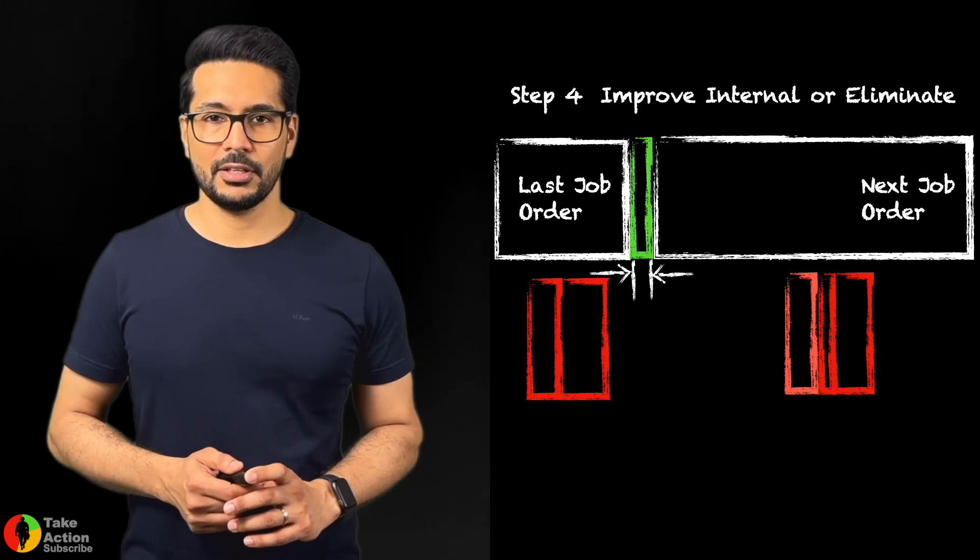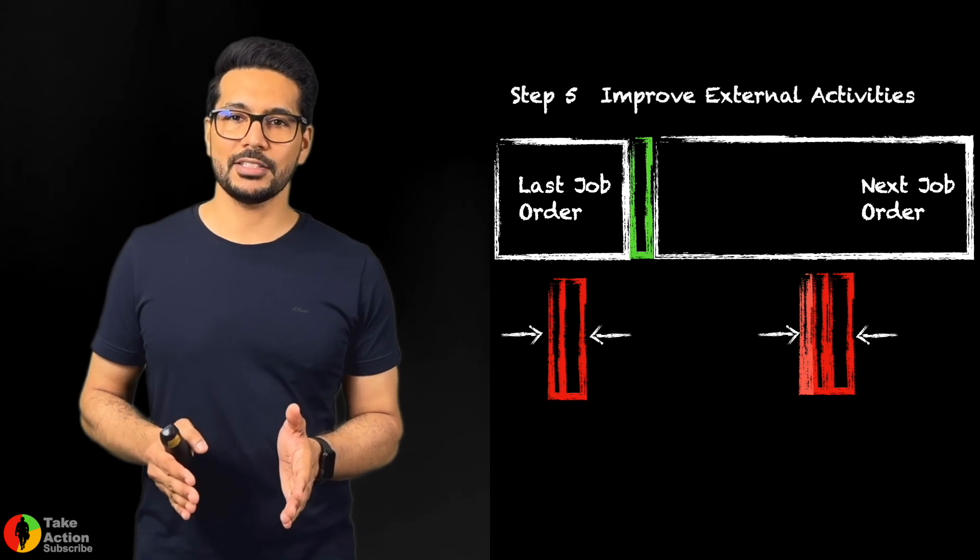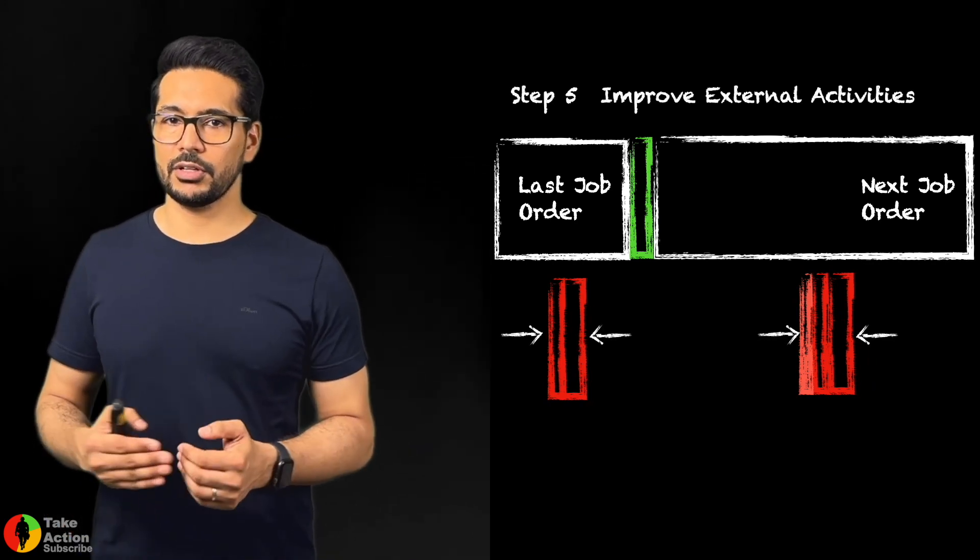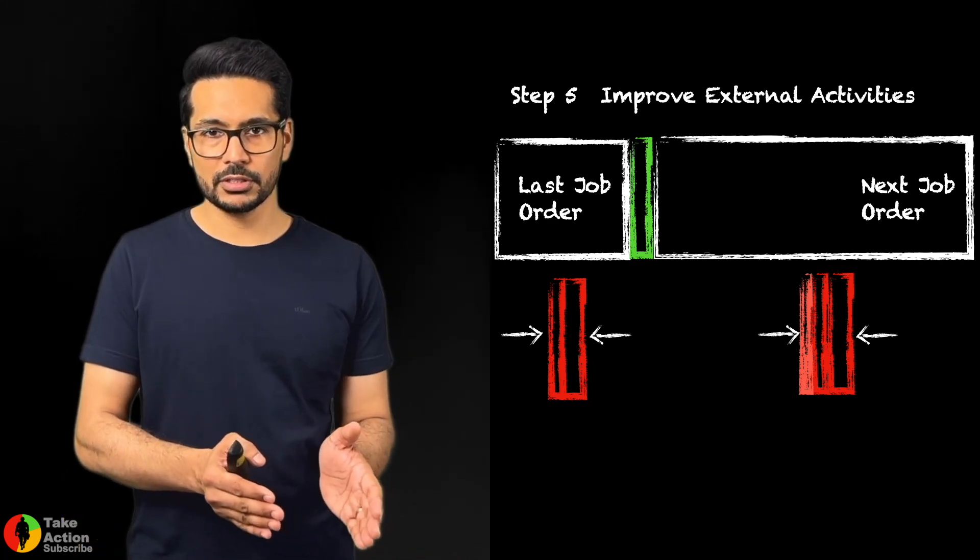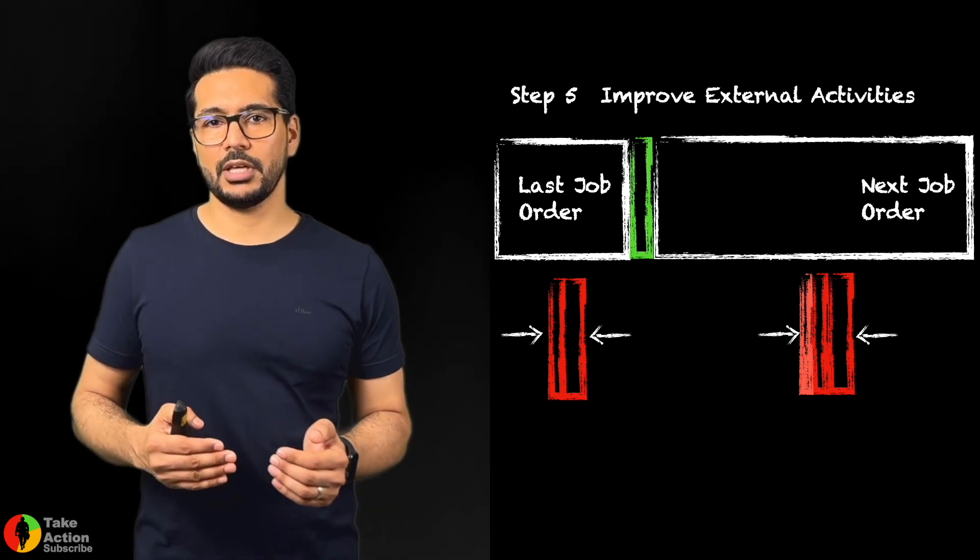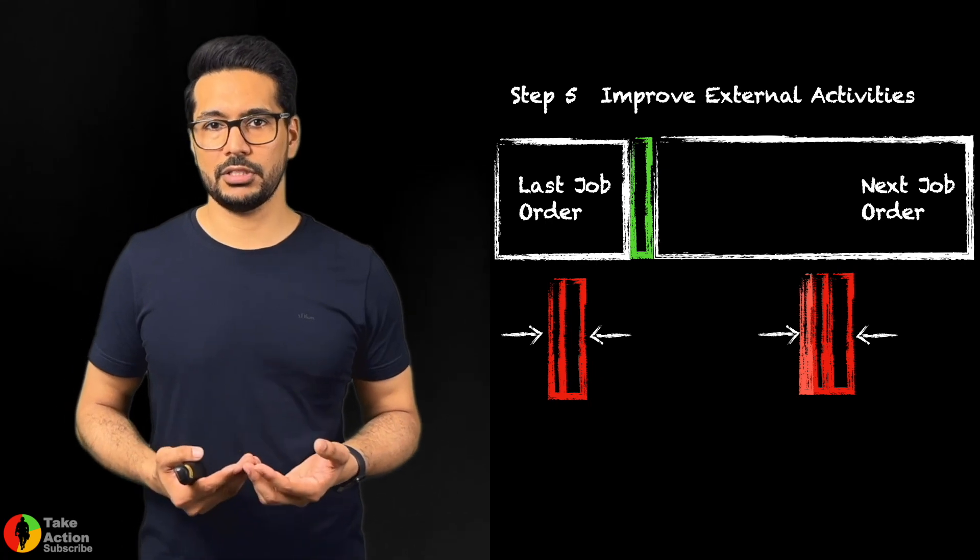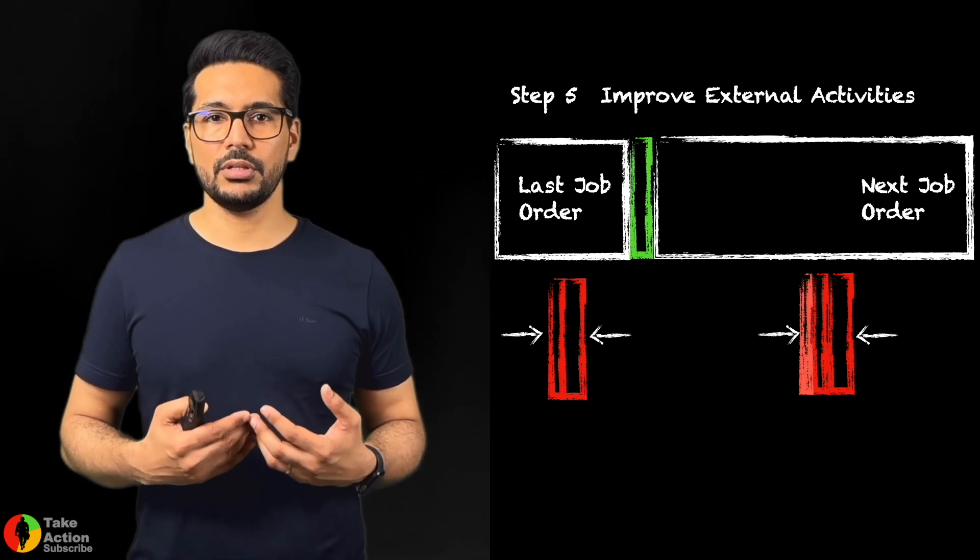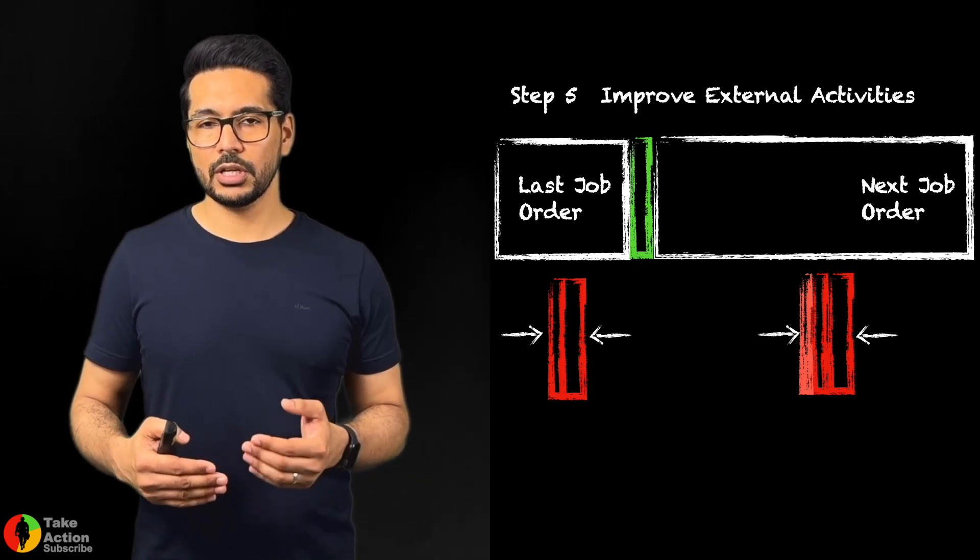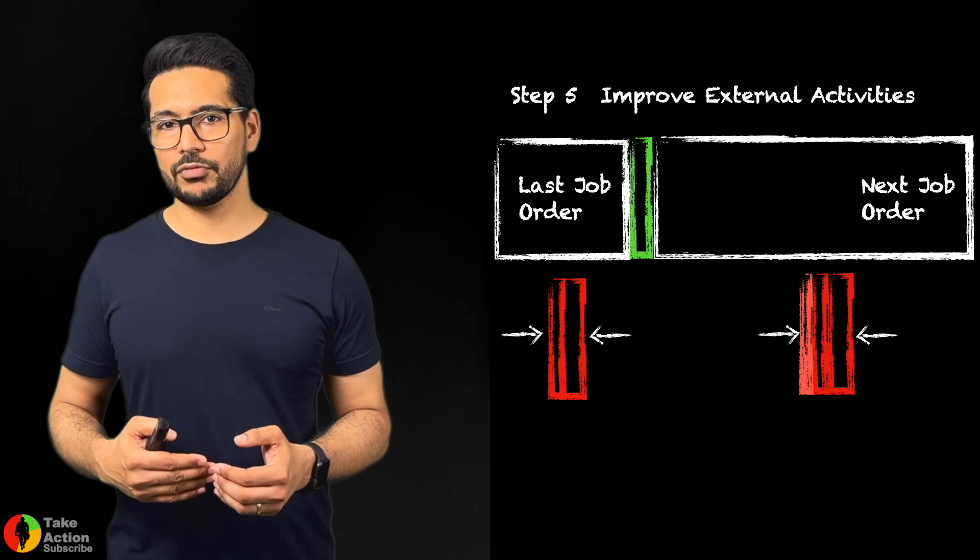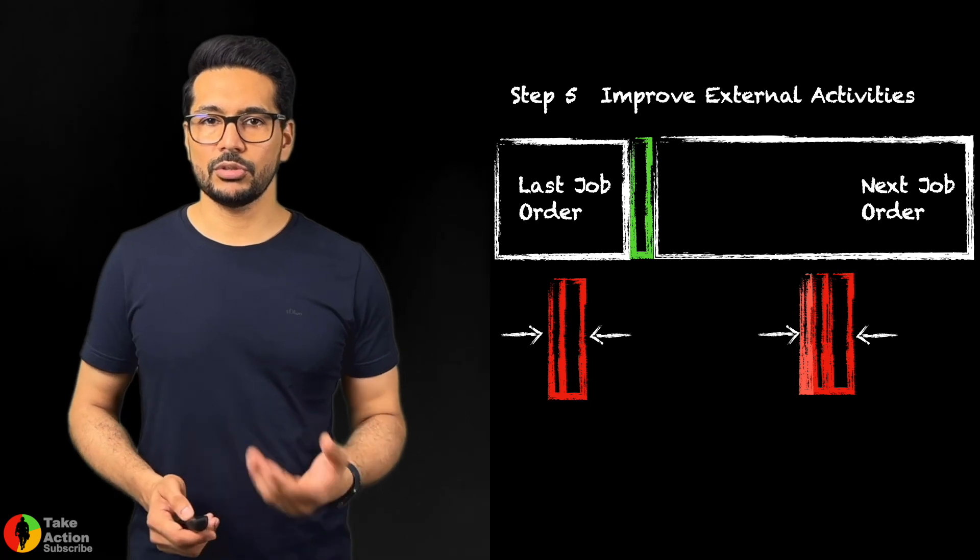Step number five is not about reducing the setup time itself, but about optimizing the external activities. For example, now the setup time has been reduced from 20 minutes to 10 minutes, but the worker is doing the external activities—it's taking 10 minutes. The whole aim of this step is to make the external activities quicker so that we can use the operator for running the machine, doing more important value-adding activities.